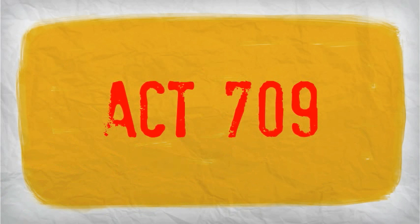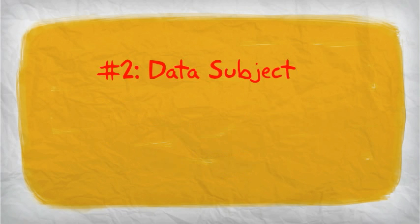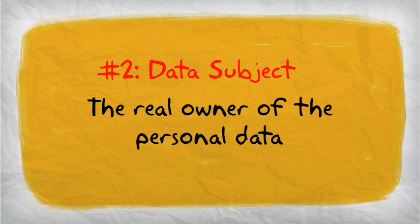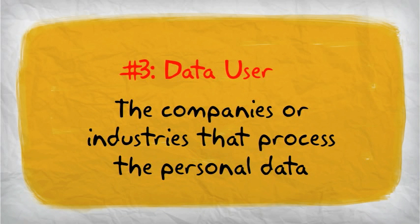Before we start to get to know more about Act 709, let's clarify three important terms: No. 1, Act 709 is the short name for Personal Data Protection Act 2010. No. 2, Data subject is the real owner of the personal data. No. 3, Data user is the companies or industries that process the personal data.